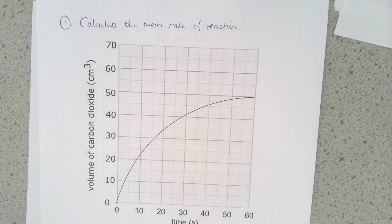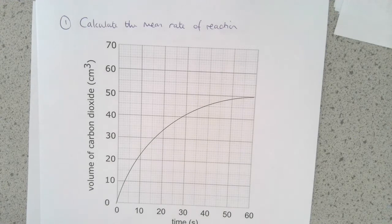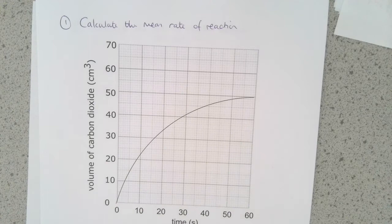We're going to look at three different ways of using rates of reaction graphs. The first one is for us to calculate the mean rate of reaction from a whole graph.